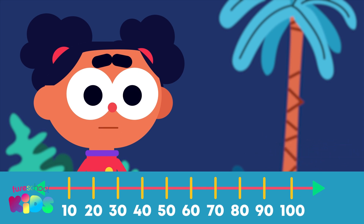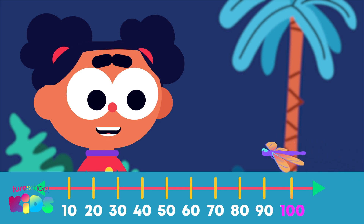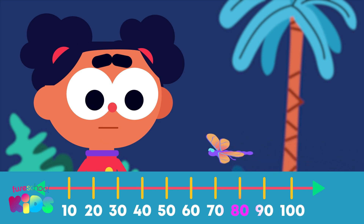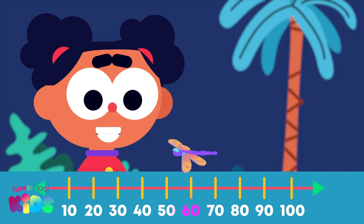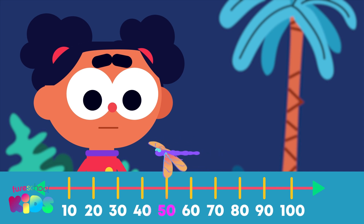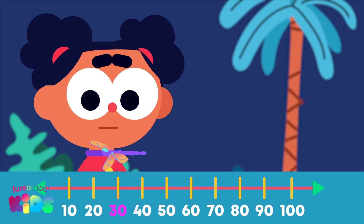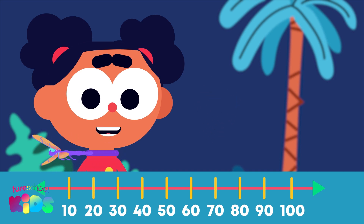We can also count back in tens. 100, 90, 80, 70, 60, 50, 40, 30, 20, 10, 0.